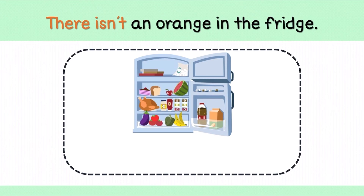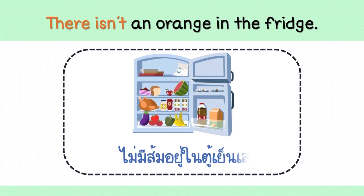ตัวอย่างเช่น There isn't an orange in the fridge. ประโยคนี้แปลว่า ไม่มีส้มอยู่ในตู้เย็นเลย คุณครูอ้นใช้คำว่า There isn't an orange นักเรียนจะสังเกตว่า orange ลูกเดียวก็ไม่มีค่ะ